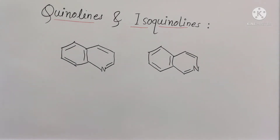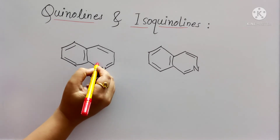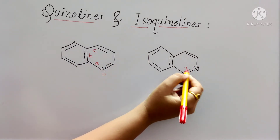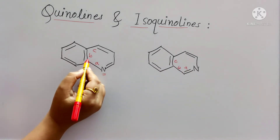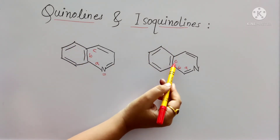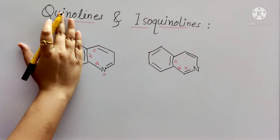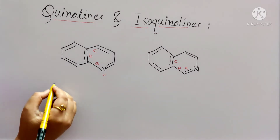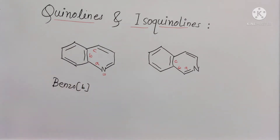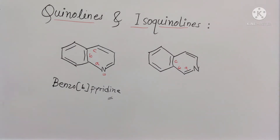Now we will see how to name these compounds. First we will give numbering to this. We will consider this bond as A. Numbering will start from the heteroatom: A, B, C. Now see what is the difference — here at position B the benzene ring is attached, and here at position C the benzene ring is attached.